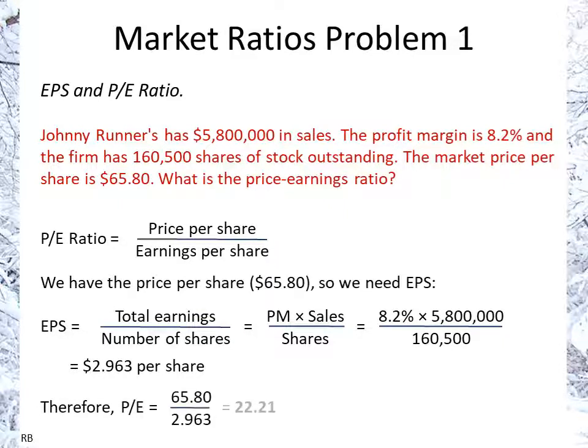So now we have the price-earnings ratio — we divide the price, $65.80, by the earnings per share, and we get 22.21. This is a multiplicative factor; it's not in dollars or any units.